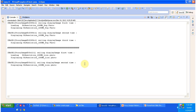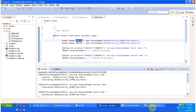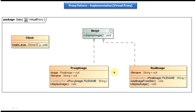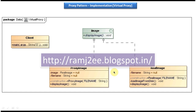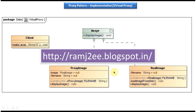Using this virtual proxy we can avoid creating costly objects. This is the best example of virtual proxy. I hope you understood virtual proxy clearly. I have put together all this code in my blog called Ram JTE — you can visit the site and get the sample code. This is about proxy design pattern implementation using virtual proxy. Thanks for watching.